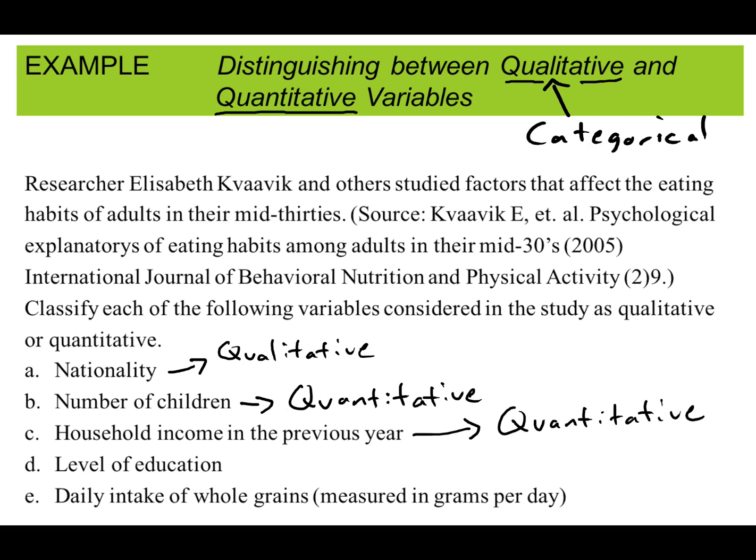The level of education of somebody, presumably whether they've had a college degree or a high school degree, that is a qualitative variable. And the daily intake of whole grains measured in grams per day, that is quantitative.